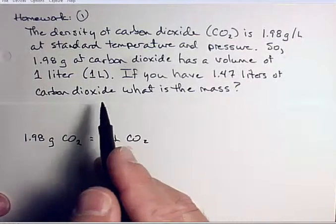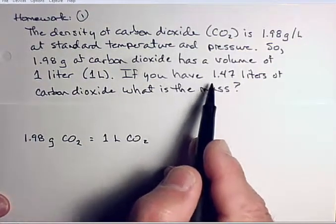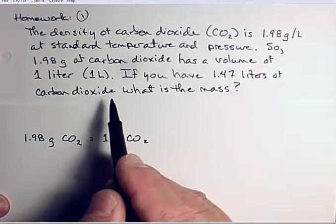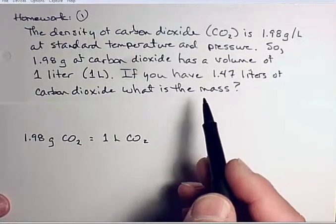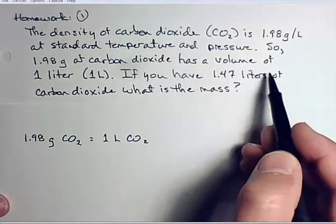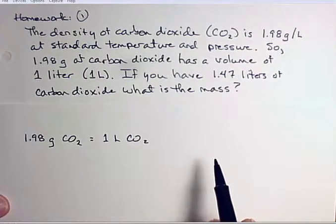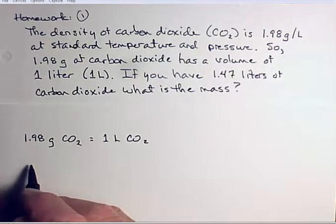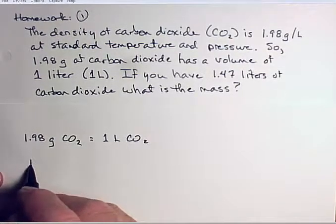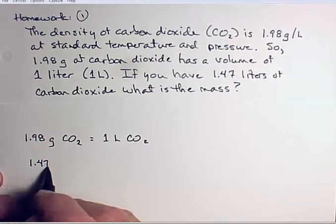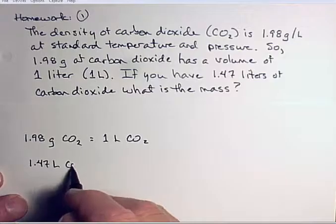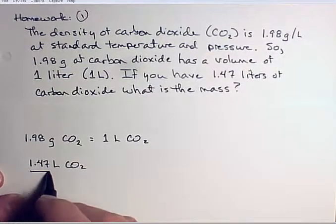Now then, if I continue to read, it says if you have 1.47 liters of carbon dioxide, what is the mass? So this is what kind of stands alone. That's the starting amount. Starting amounts are what you put over 1. So you find what stands alone, what is the starting amount, and you put that over 1. 1.47 liters CO2, and that goes over 1.